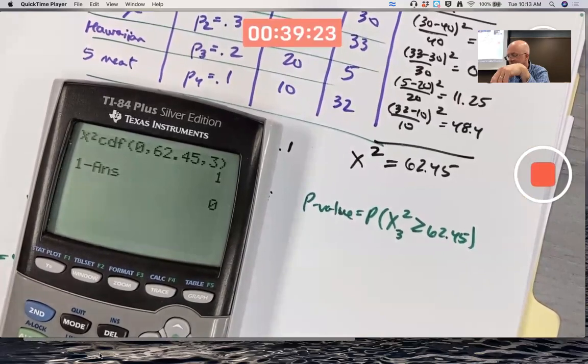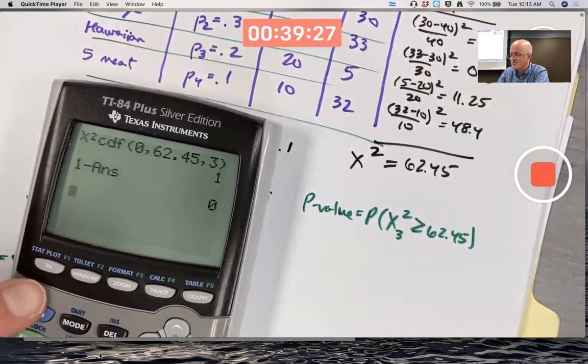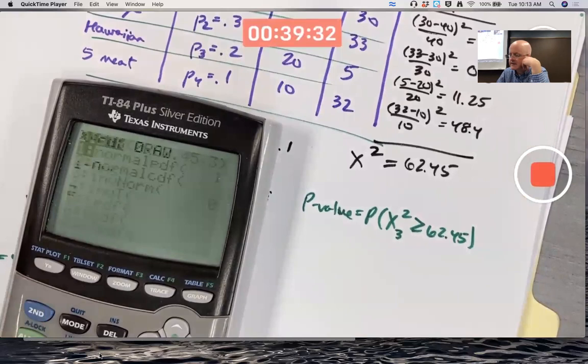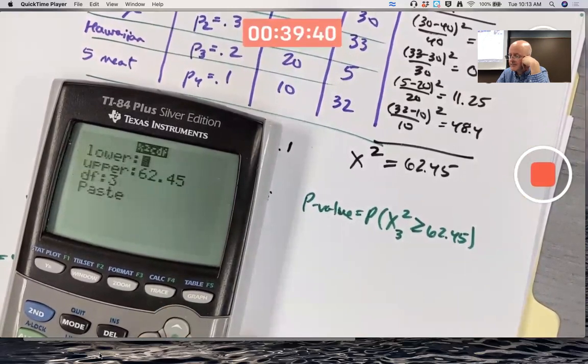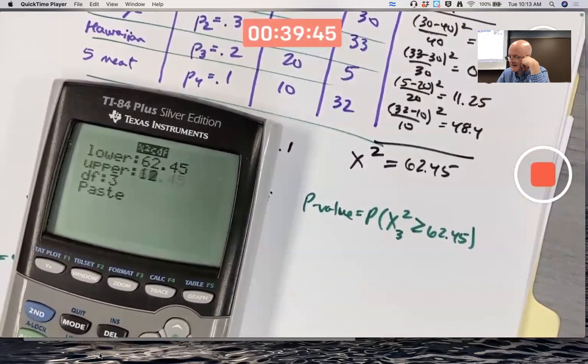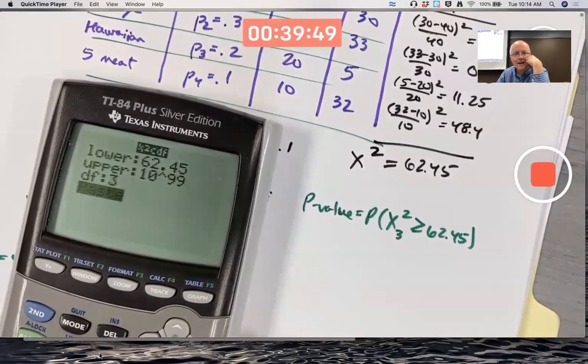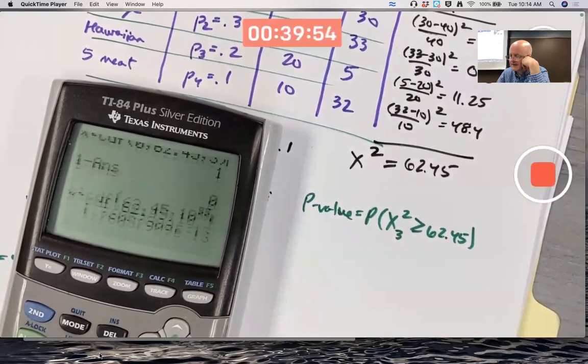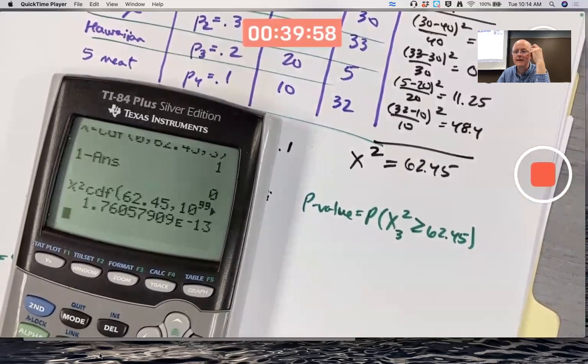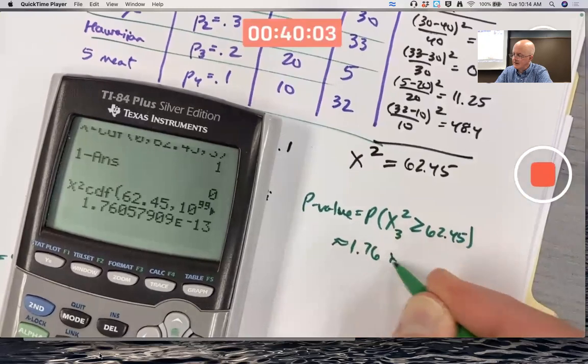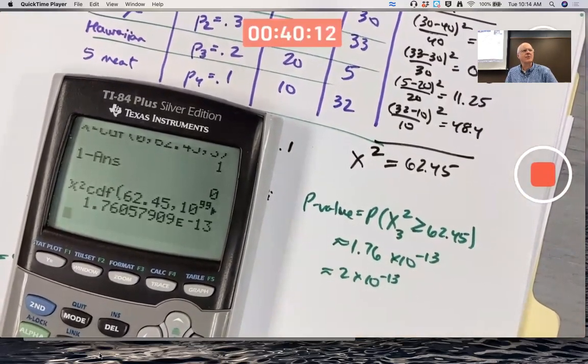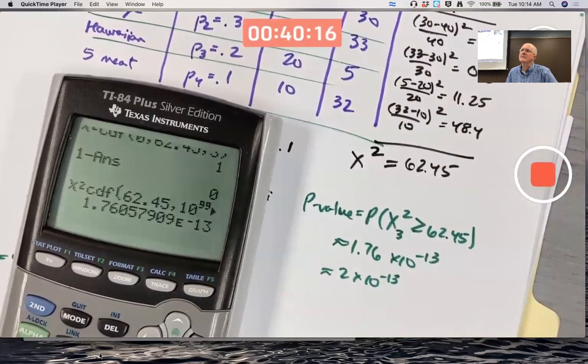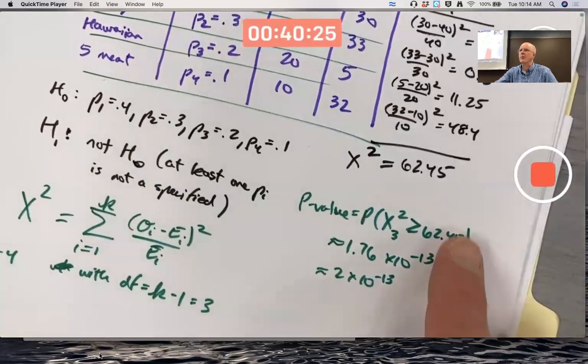The p-value is essentially zero. I wonder if we did the other way if we'd get something like 10 to the negative 30 or something, I don't know, let's see. Okay, about 1.76 times 10 to the negative 13. It's probably best to write approximately 2 times 10 to the negative 13. 10 to the positive 12 is a trillion, right? Yeah, this is like 1 in 10 trillionth of a chance of observing something this extreme or more extreme if we assume the null is true.